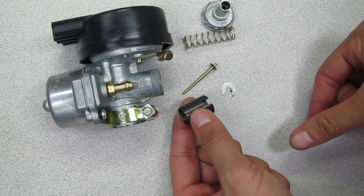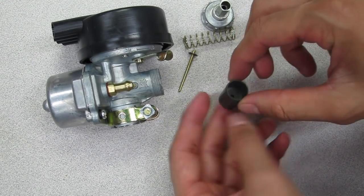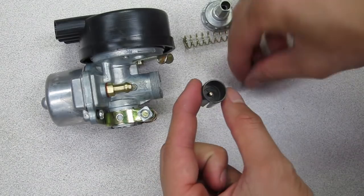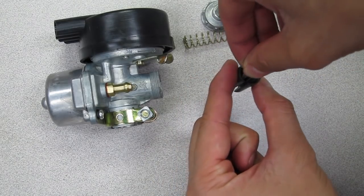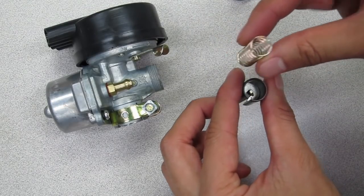Once everything is out, reassemble them outside the carburetor. Grab the plunger, drop the jet needle through the hole, then drop and align the e-washer. Make sure the slit on the washer aligns with the slit on the plunger. Then place the spring on top.